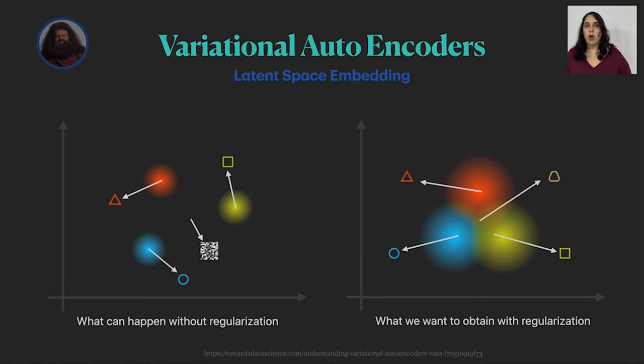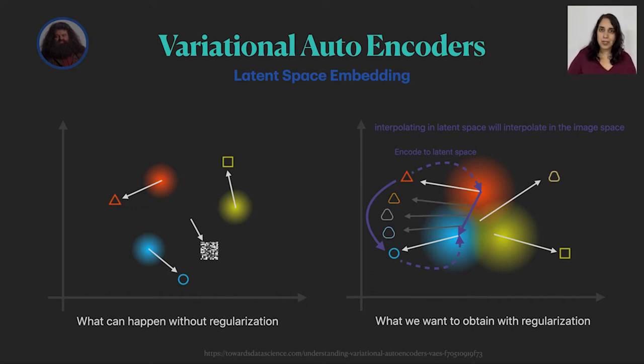This also allows us to do some other cool tricks. So let's say we want to interpolate between the triangle and the circle. What we can do is use the encoder to encode them into the latent space, interpolate between them in the latent space. And now we can use the decoder on different points on this interpolation line to generate new images that interpolate between the triangle and the circle in the image space. Pretty cool, huh?